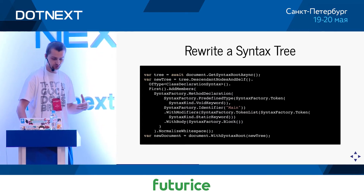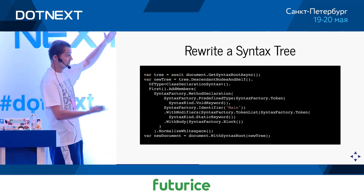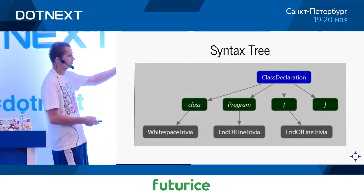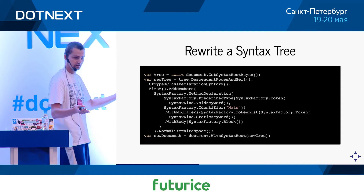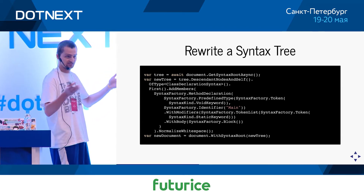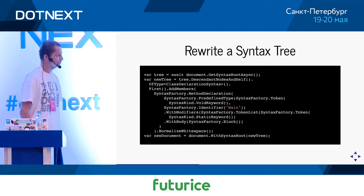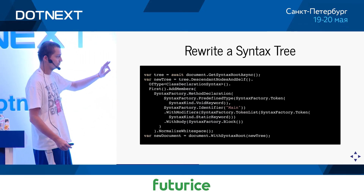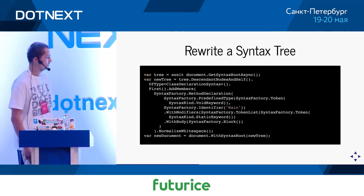We would grab the syntax tree representing the whole document, locate the first class declaration, and add a child node underneath it. To add this child node we generate a method using the syntax factory. A method needs a return type — in our case, static void main, so it will have a void keyword. Keywords are tokens, so it has to be wrapped into a token. The identifier would be main, and we need a token list with just one token representing the static keyword. The body can be an empty block generating empty curly braces.